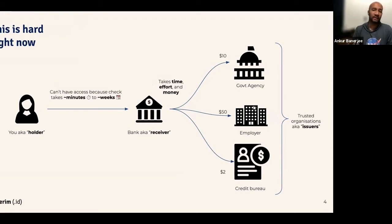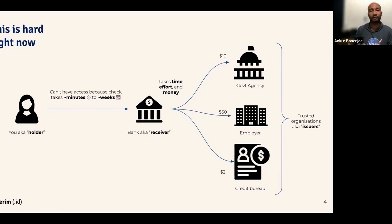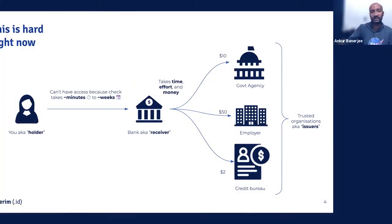What that usually results in, and why it's hard right now, is that you as the holder of that information can't have access to what you need to, because it takes anywhere from minutes to weeks to check things. For the bank or the receiver of the information, it takes time, effort, and money — they often have to make payments in the range of $10 to hundreds of dollars — as they go to the original issuers or their authorized agents and proxies to find out if these things are correct.